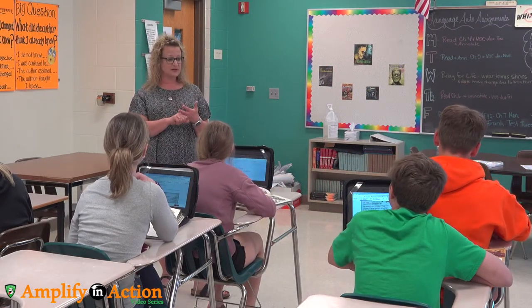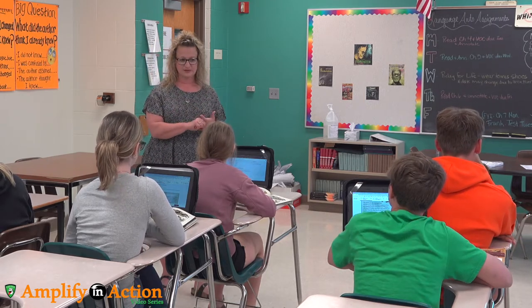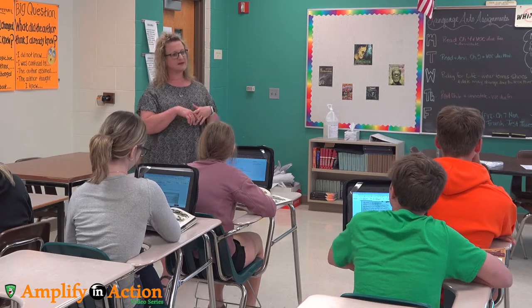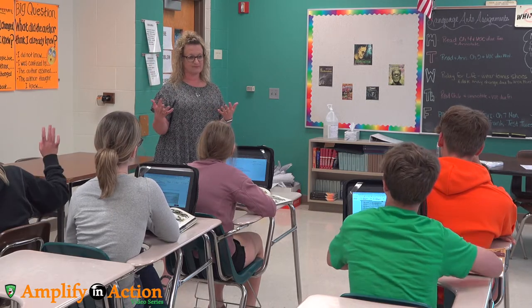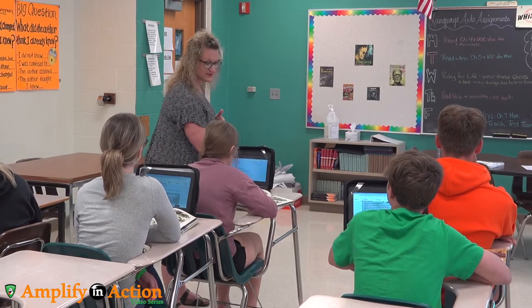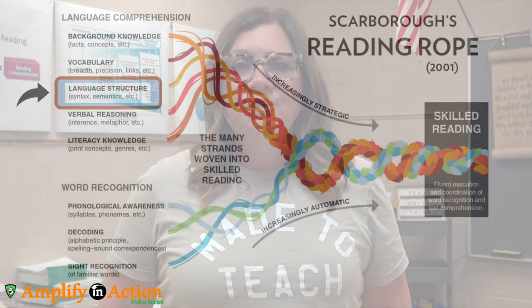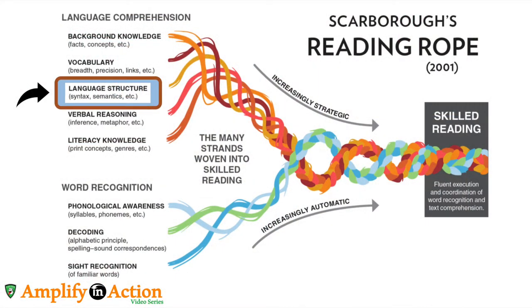It helps us to put the words into easier words that we can understand. And then if we can understand those words, we can understand what they're trying to say. And so with words like this, sometimes this is hard. As students think deeply about the meaning of not only the words, but in some cases the images, they are honing in on the language structure strand of Scarborough's rope. These strands work together so our students continue to become skilled readers.